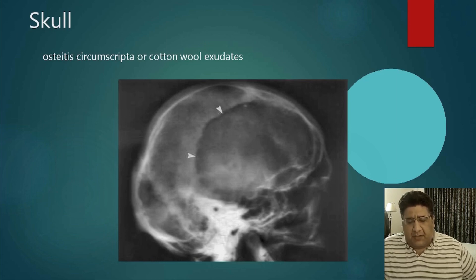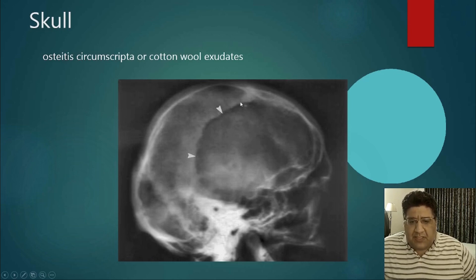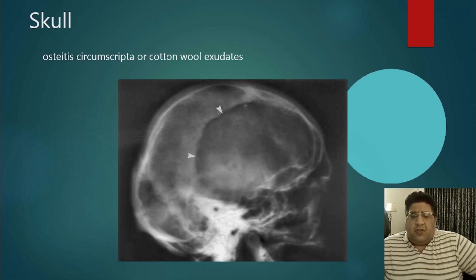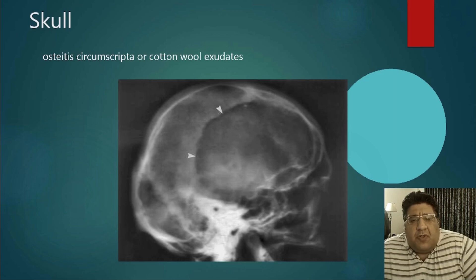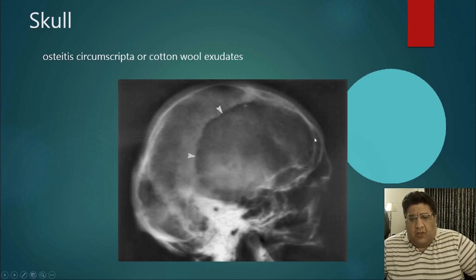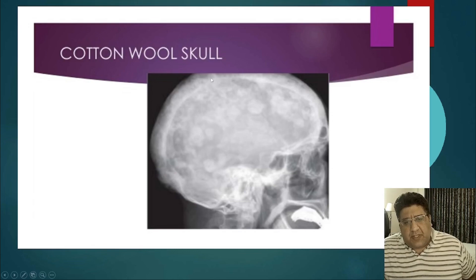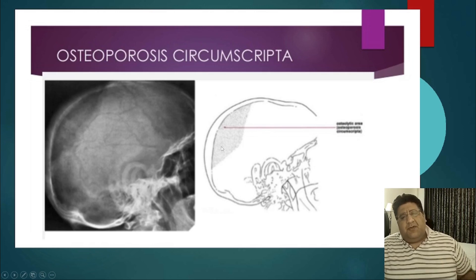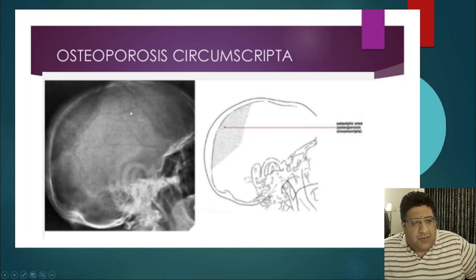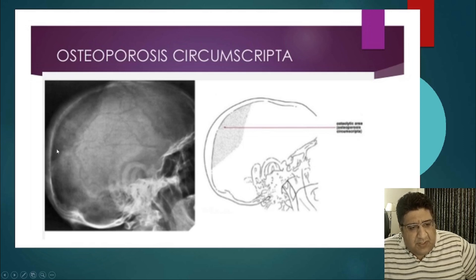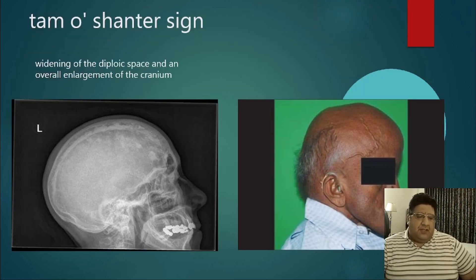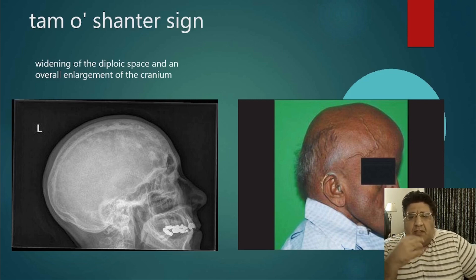Osteoporosis circumscripta — also called osteitis circumscripta — is a well-circumscribed osteoporotic patch in the skull. The next sign is cotton wool skull: thickening of the outer table of the skull with white, fluffy spots resembling cotton wool. The same skull X-ray reiterates the well-circumscribed osteoporotic patch of osteoporosis circumscripta.